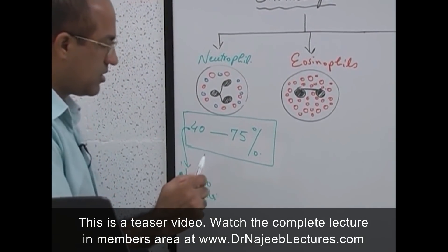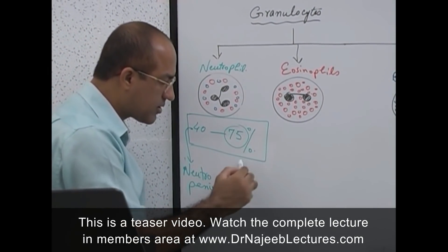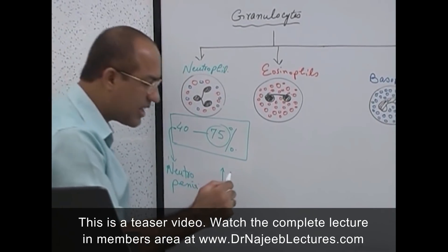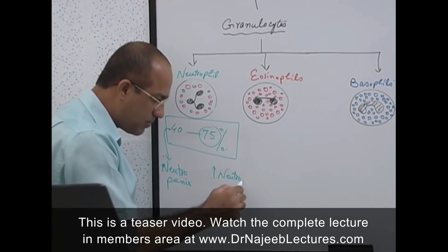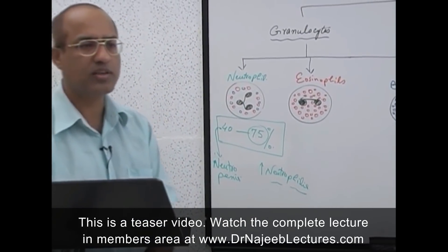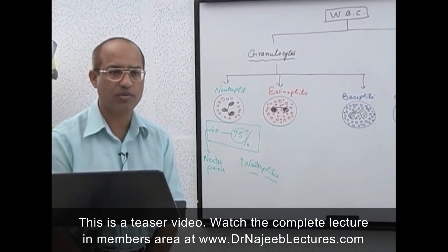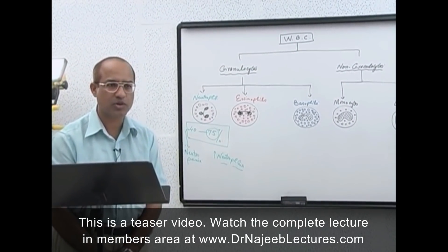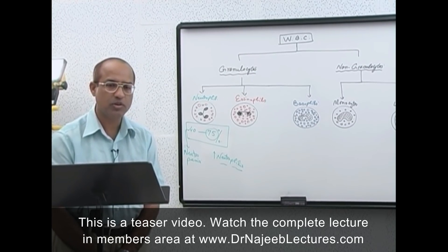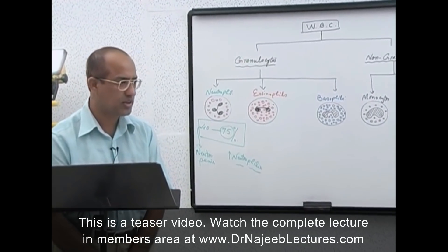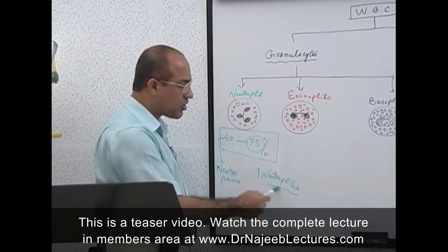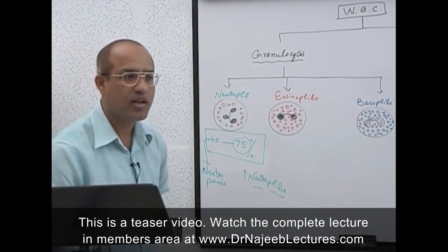If neutrophil count is less than 40 percent, the condition is called neutropenia. If it is more than 75 percent, the condition is called neutrophilia. Neutrophilia is especially seen in acute inflammation — neutrophils are the cells of acute inflammation. In short-duration inflammation, neutrophils become very active and their count in the blood goes up, as many neutrophils are released from bone marrow stores.